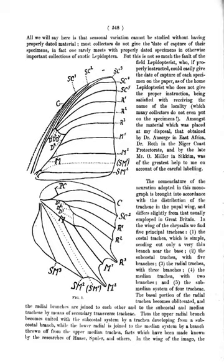Ectognathous: anatomical feature, having exterior mouthparts or exposed; a defining feature of insects. Elytron: anatomical feature, the modified, hardened forewing of certain insect orders, notably beetles (Coleoptera) and some of the true bugs (Hemiptera).